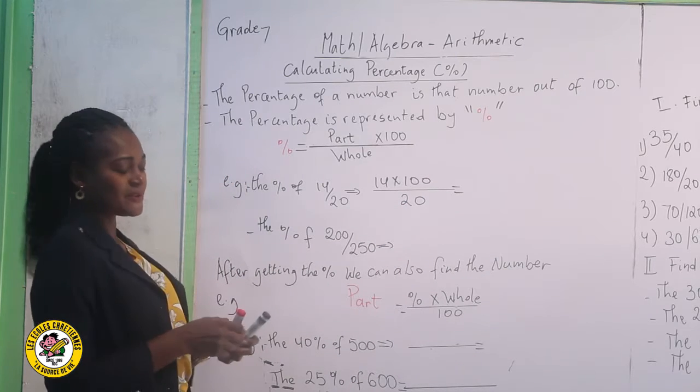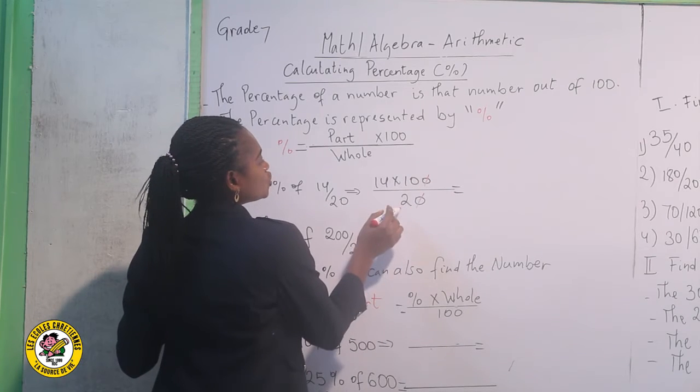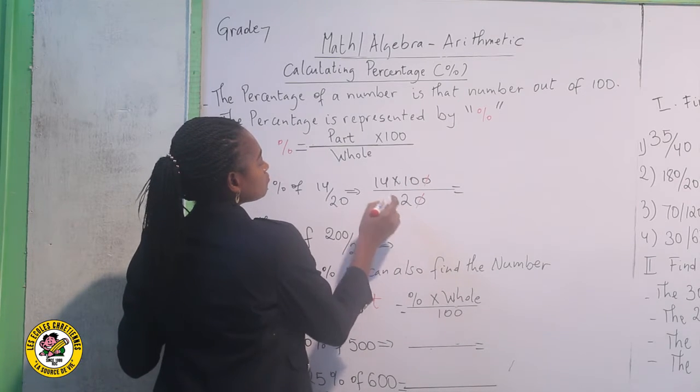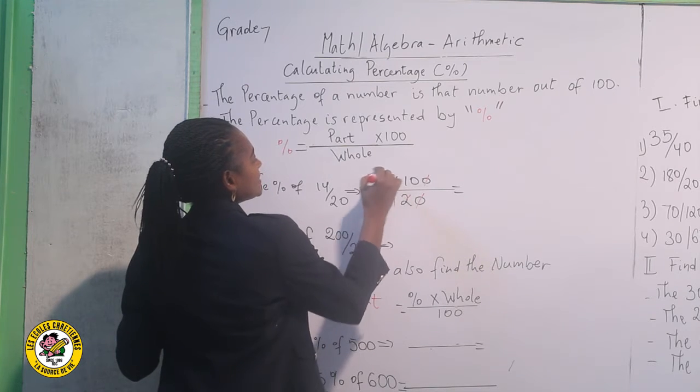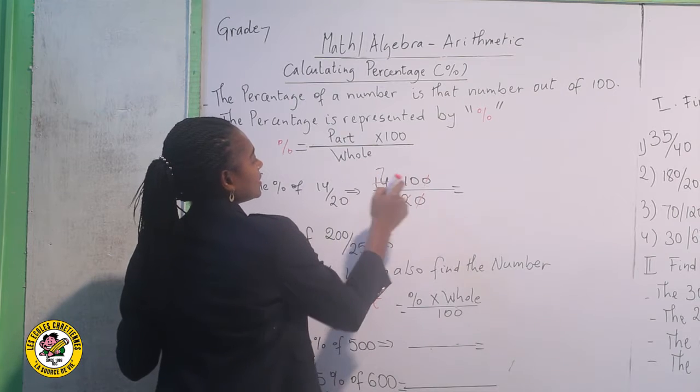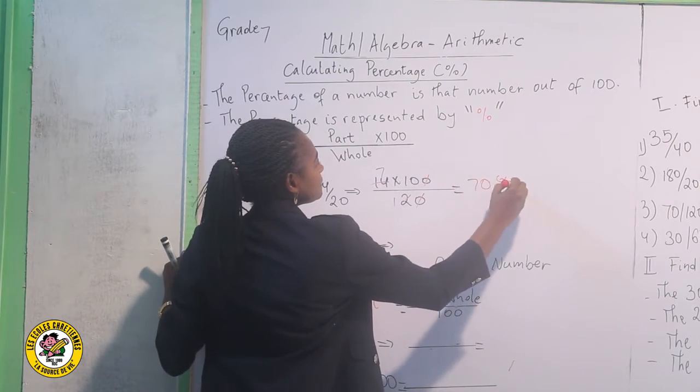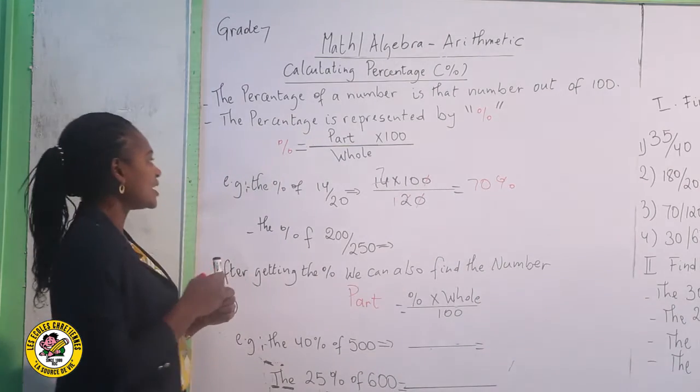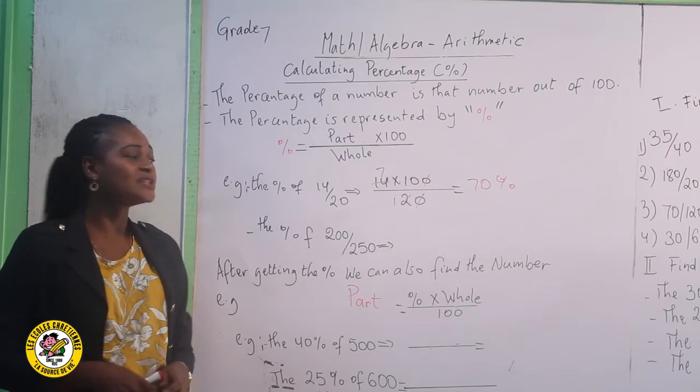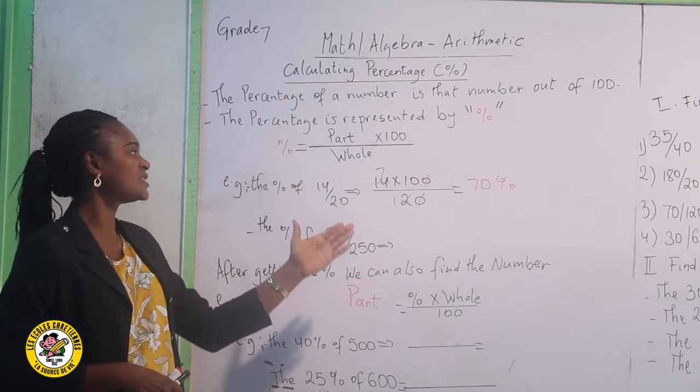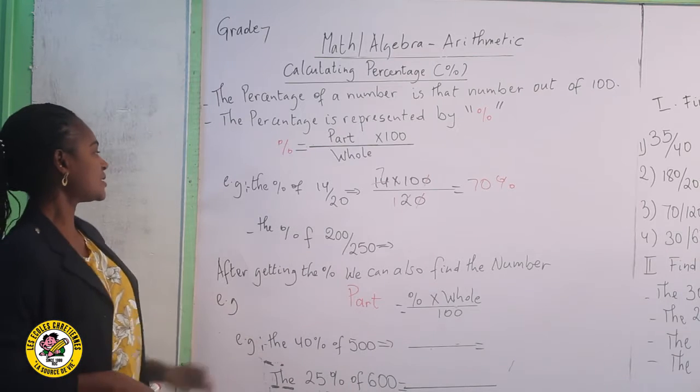We are going to write 14 times 100 divided by 20. There is a way to simplify. Zero with zero, 2 will be simplified. With 4, we have 7. 7 times 10 gives 70%. This means that if somebody got 14 out of 20, out of 100 this will become 70%. This is the best example.